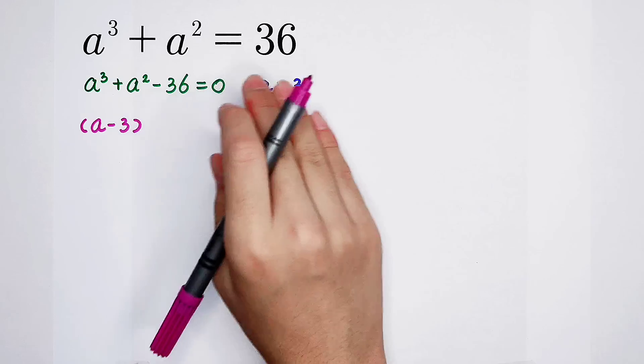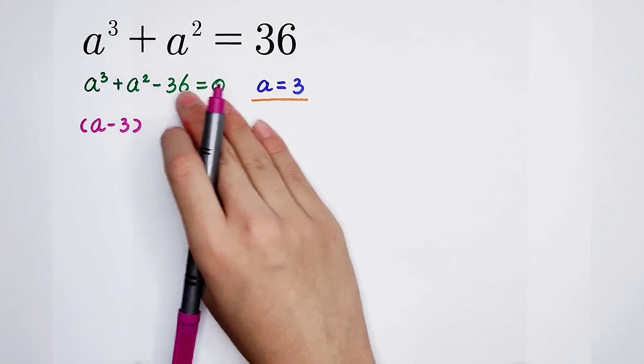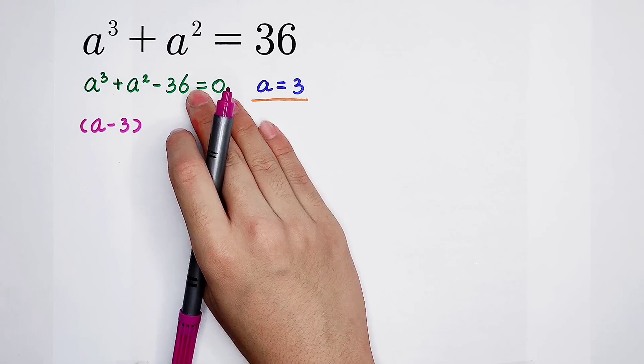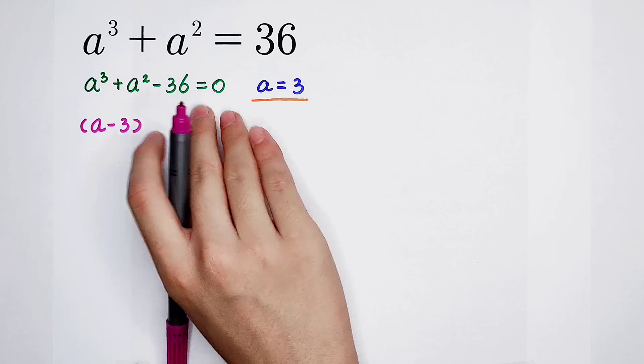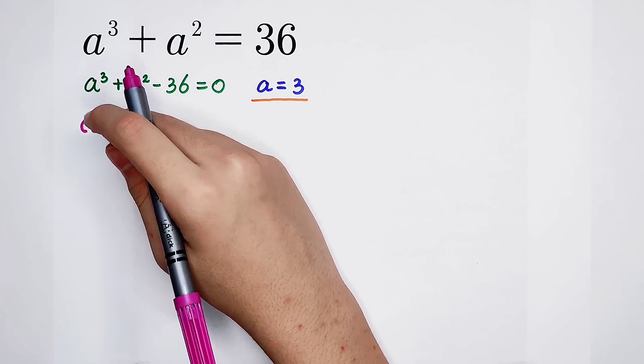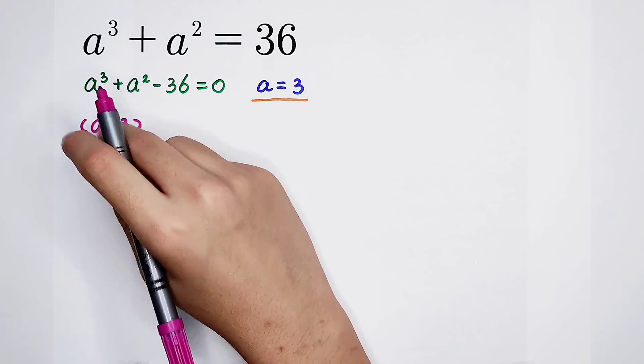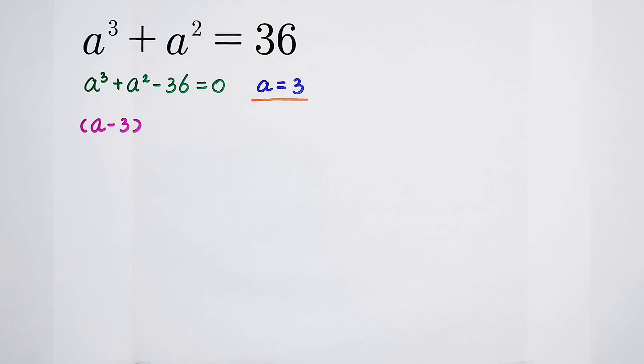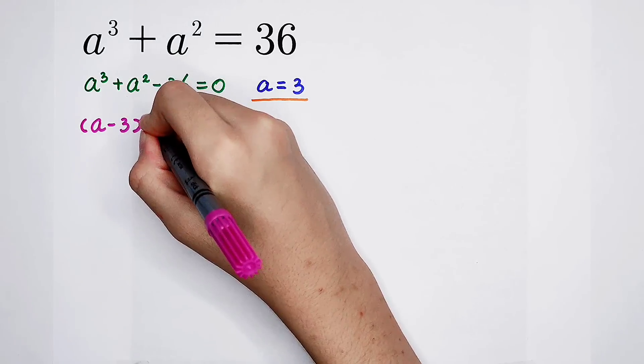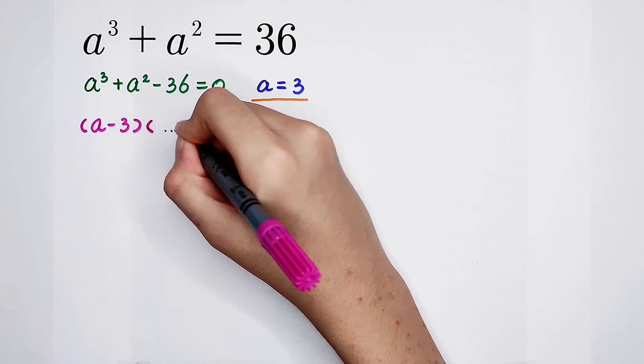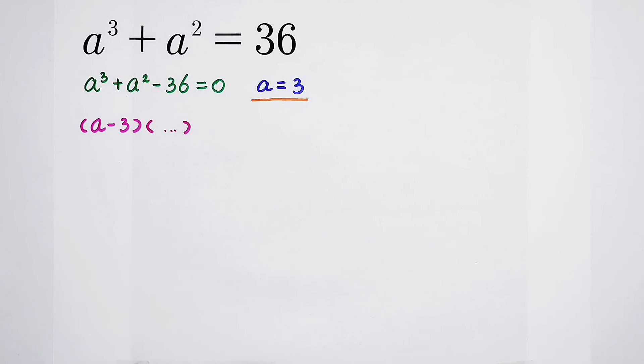a minus 3 is a factor of the left-hand side, and then we have to find the other factor. So what should we do?